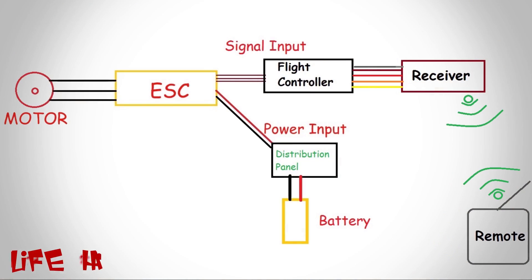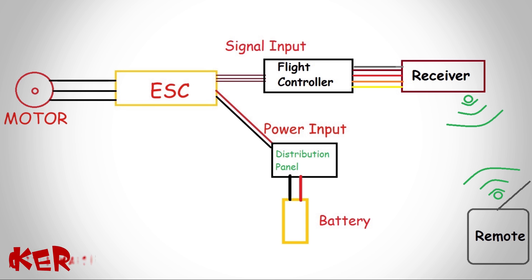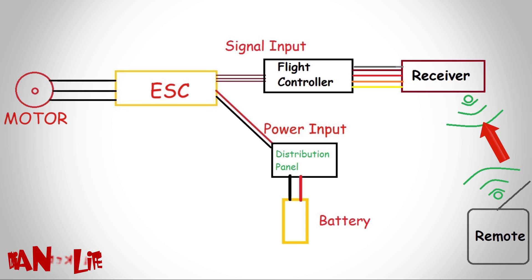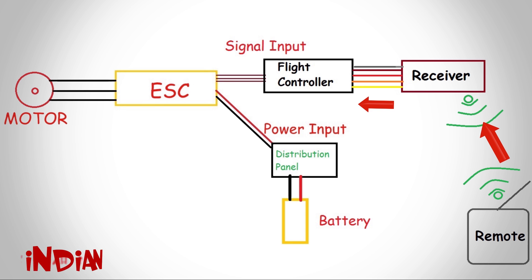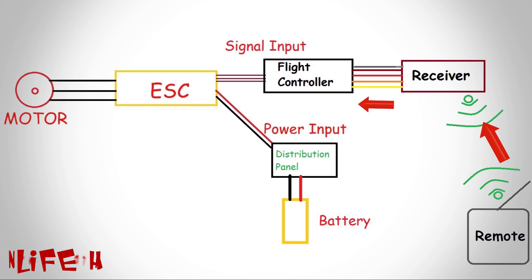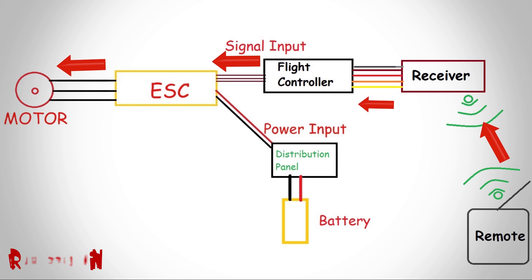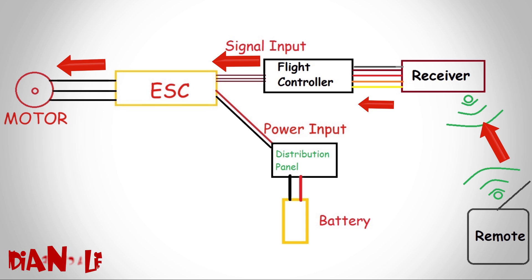The flight controller is connected with the receiver of your remote. When you transmit any signal from your remote, it is received by the receiver, which then transmits it to the flight controller, and the flight controller sends it to the motors, which change RPM as per the signal.